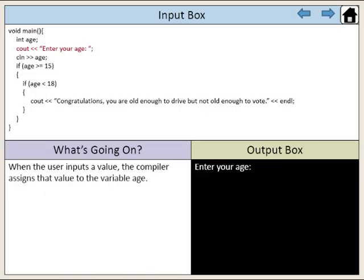In this example, we have asked the user to enter their age. When the user inputs a value, the compiler assigns that value to the variable age. Here, the user enters the value 17. 17 is assigned to the variable age.